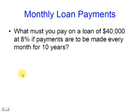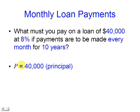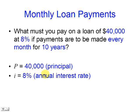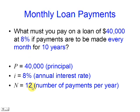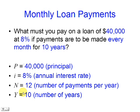For example, what must you pay on a loan of $40,000 at 8% if payments are to be made every month for 10 years? P, the principal, is $40,000. I is the annual interest rate, 8%. N is 12, since we have to pay every month. And the term is 10, the number of years.